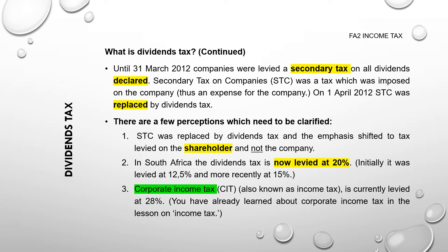Dividends tax is a fairly recent tax — it only came into effect on the 1st of April 2012. Up until the 31st of March 2012, companies were levied a secondary tax on all dividends declared, called Secondary Tax on Companies or STC. The important difference between STC and dividends tax is that STC was levied on the company, so it was an expense for the company. In the case of dividends tax, which we have had since the 1st of April 2012, the tax is not a cost to the company — it is a cost for the shareholder. However, the company has the duty to pay the tax over to the revenue service on behalf of the shareholders.